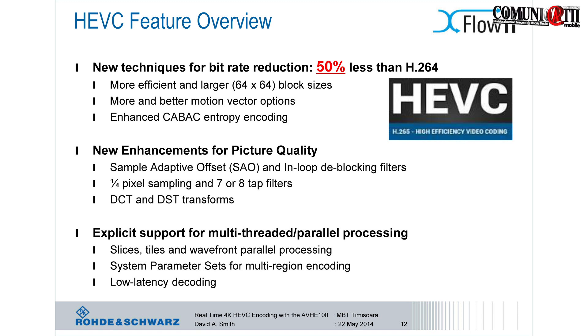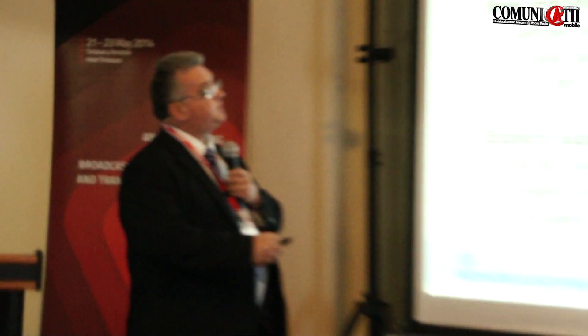H.265 defines a 64x64 block size, which is much more efficient than a 16x16. It also improves the motion vector options. In MPEG-2 you loosely have just two reference frames. In MPEG-4 that went to four reference frames. In H.265 you can have a list of reference frames as long as you want to make it. There are challenges in how you manage it for encoder manufacturers, but it's very, very flexible indeed.